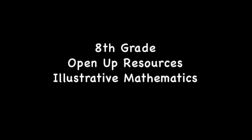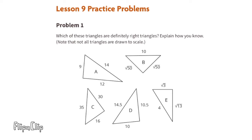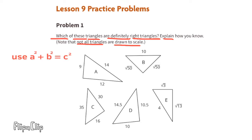Eighth grade Open Up Resources Illustrative Mathematics, Unit 8 Lesson 9. Problem number one: which of these triangles are definitely right triangles? Explain how you know. Note that not all triangles are drawn to scale. Remember, a right triangle has one angle that's 90 degrees. We can find a right triangle by using the Pythagorean theorem: a squared plus b squared equals c squared.